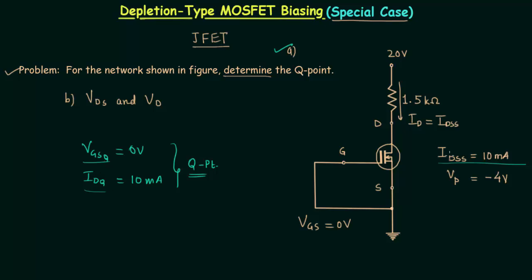The device here is an N-channel depletion-type MOSFET. IDSS is a property of the device and is given as 10mA. Along with IDSS, VP is also given, which equals minus 4V.